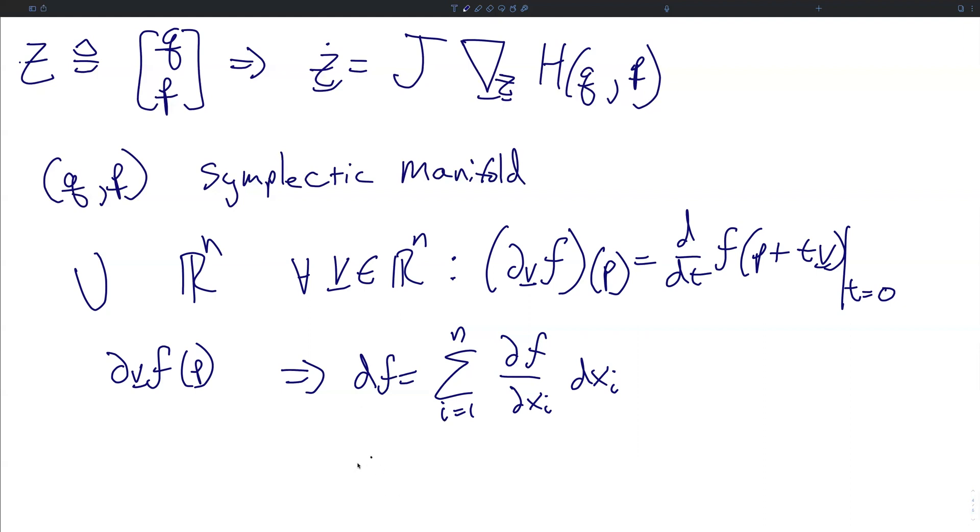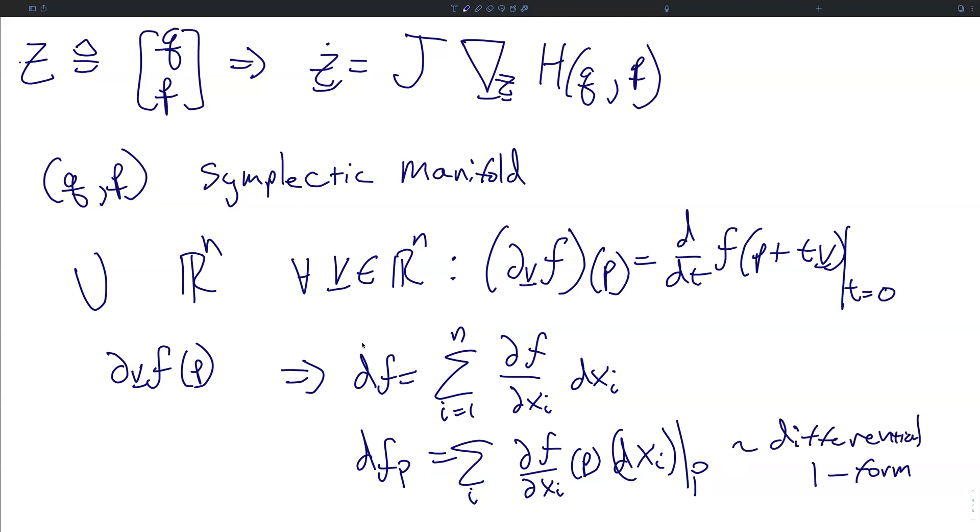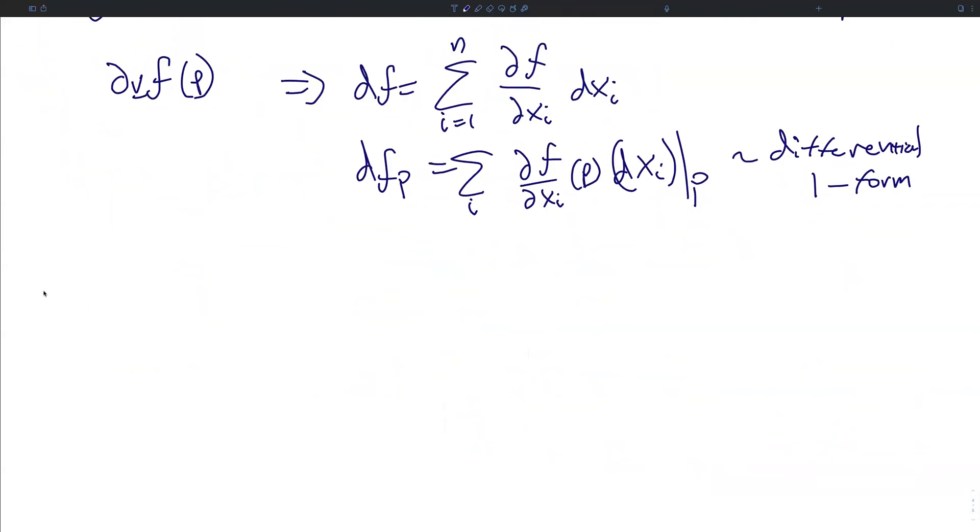And we can similarly write dF evaluated at P is a summation of the partials of F with respect to those coordinates X_i evaluated at P times the differential X_i in the limit of P. This is known as a differential one form. We can further generalize this and write alpha_P is the sum over i of functions G_i of P times the differentials of H_i at P. This is a one form for any functions G sub i, H sub i defined on our open set U.